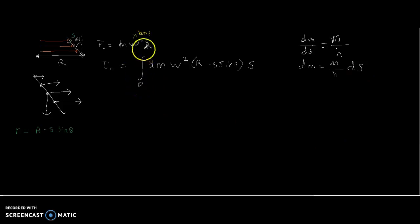So, this would become dm is equal to m over h ds. And we are integrating from 0 to h. So, then this becomes the integral 0 to h. And let's pull out the constants as we do this. m is a constant, h is a constant, omega squared is a constant as well. So, then it's just the integral 0 to h of r minus s sine theta times s ds. When you do integrate this, and you evaluate at the upper and lower bounds, you eventually get that the centrifugal torque is equal to m omega squared h cosine theta times r over 2 minus h over 3 sine theta.